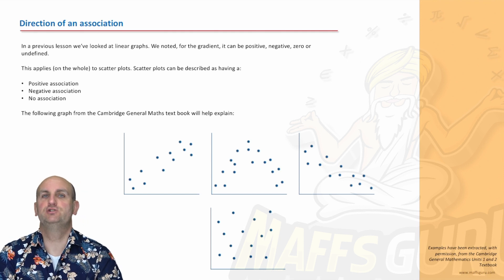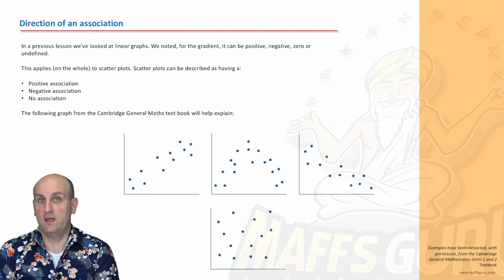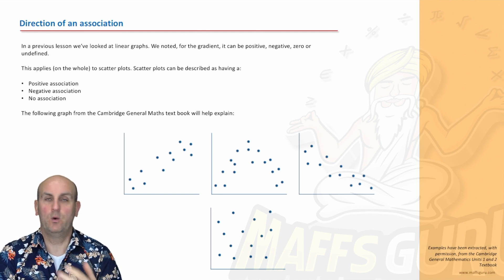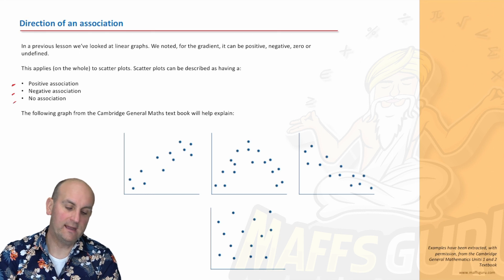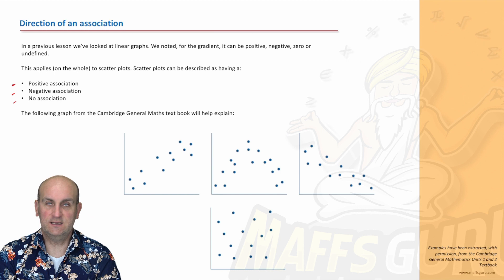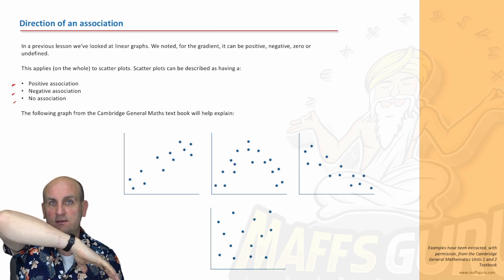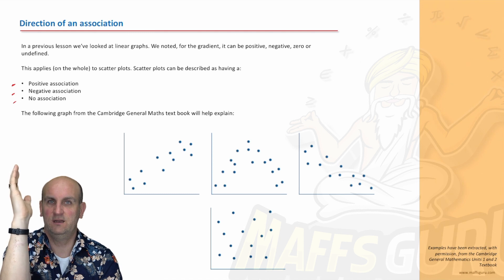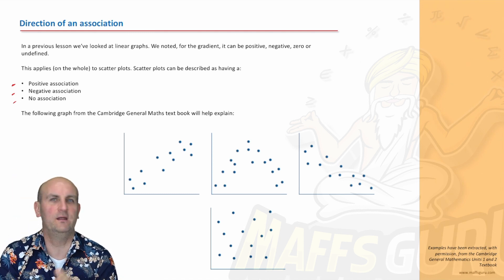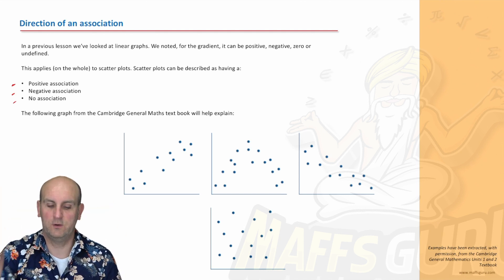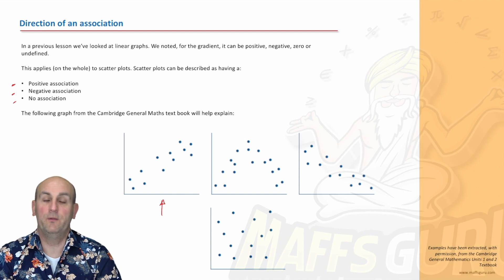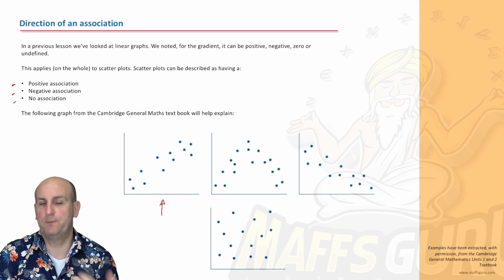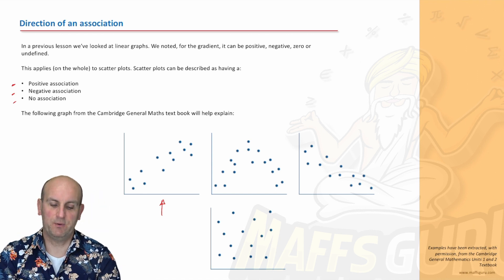Let's look at the direction of an association. When we describe our scatter plot, we're looking at using particular words: a positive association, a negative association, and no association. We've already looked at gradients — we know that's a positive gradient and that's a negative gradient. So, what we might get is something looking like this. I would say there is a positive association — the points seem to be going up.